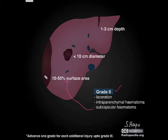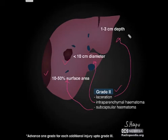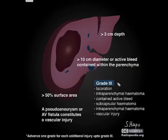In grade 2, the subcapsular hematoma is 10 to 50% surface area. In grade 3, the subcapsular hematoma is less than 10 centimeters in diameter, whereas laceration is 1 to 3 centimeters in depth.